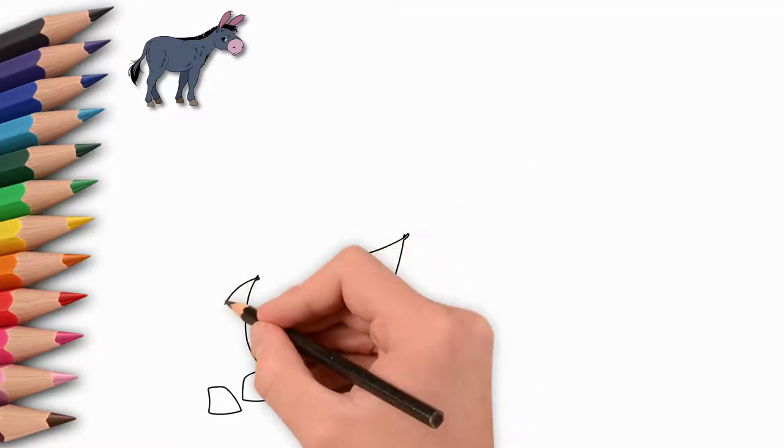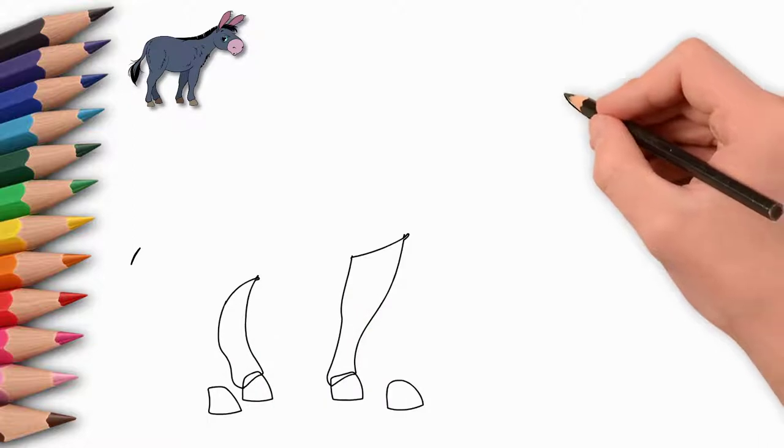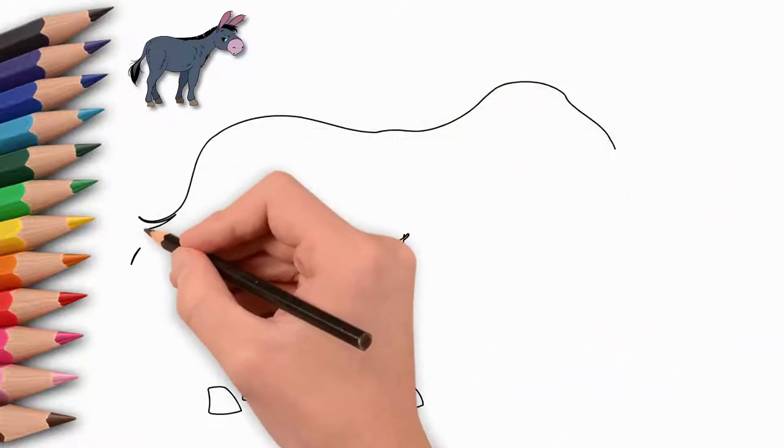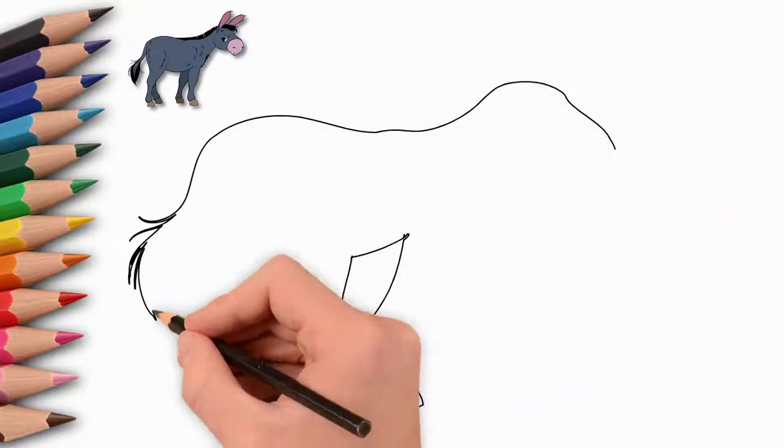Next, draw the legs. Each donkey has four legs. We draw two closer to us and two legs a little further from us.